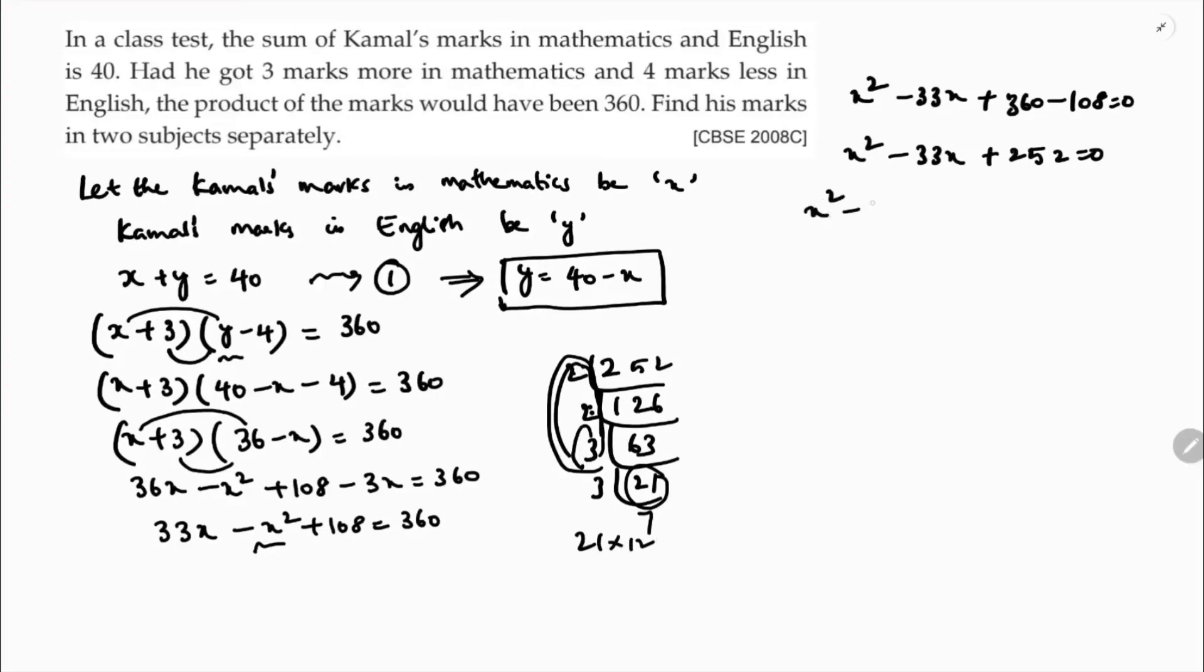So x squared minus 21x minus 12x plus 252 equals 0. Taking common: x(x minus 21) minus 12(x minus 21) equals 0, which is (x minus 21)(x minus 12) equals 0. So x equals 21 or x equals 12.